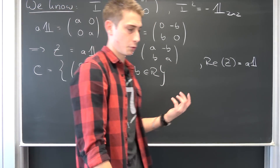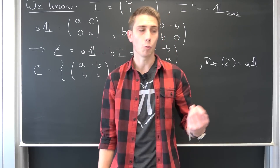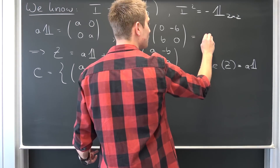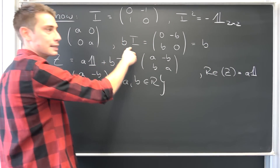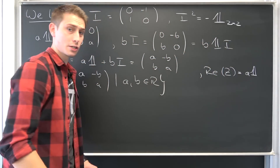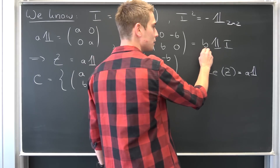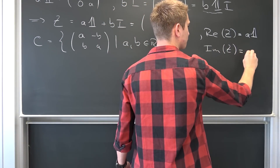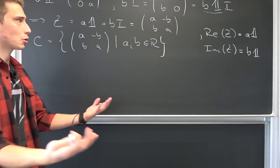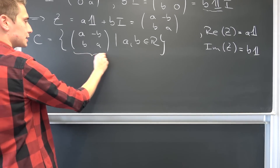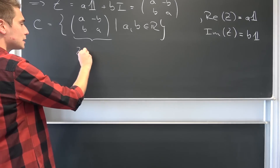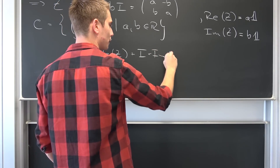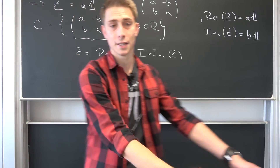I want you to remember something from the regular real numbers: one times something is just that something itself, meaning we can express B times I as nothing other than B times the identity matrix times I, because the identity matrix times I is just I itself. And this thing right here is just our imaginary part Im(Z), being thus B times the identity matrix. Meaning our complex number Z can be expressed as Z equals the real part of Z plus I times the imaginary part of Z. Those are complex numbers — this is just how it works.